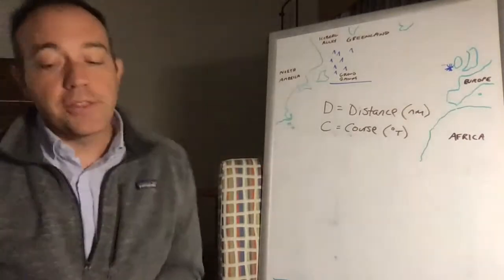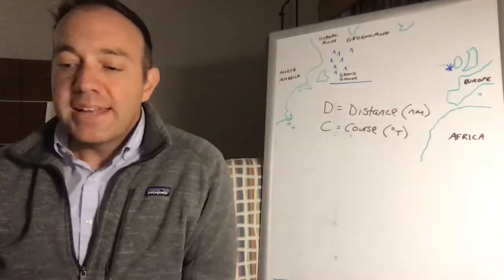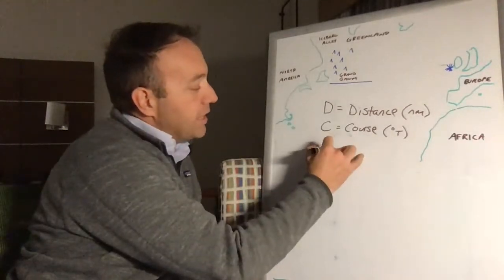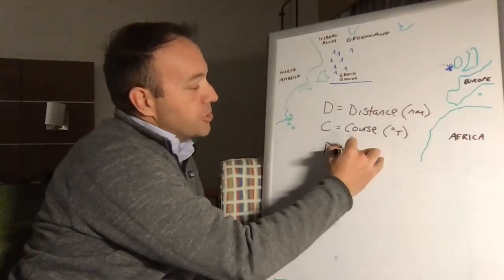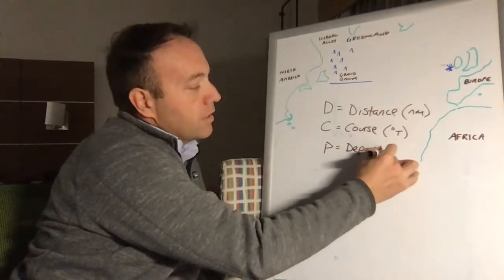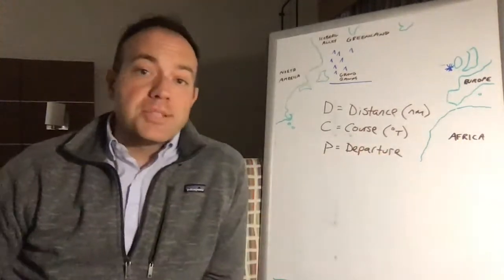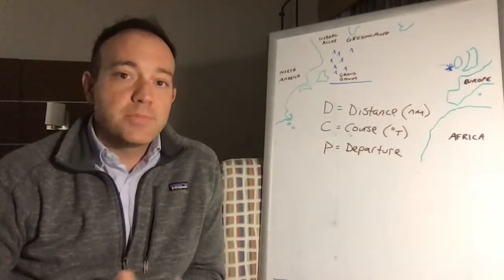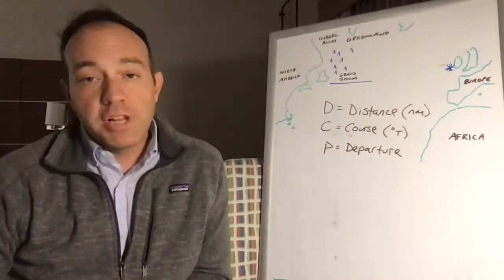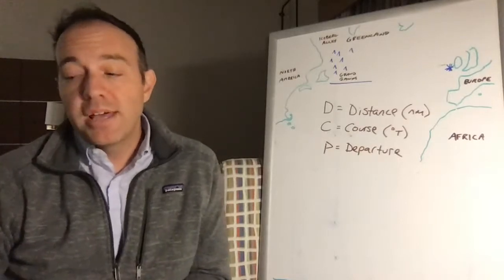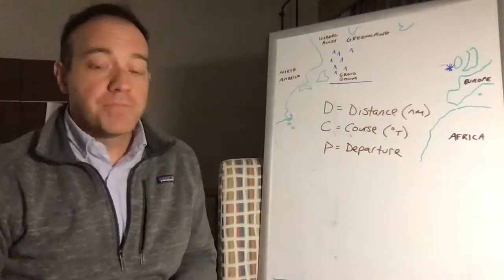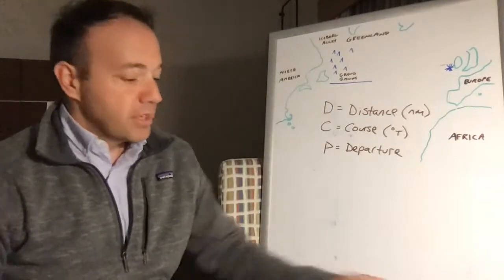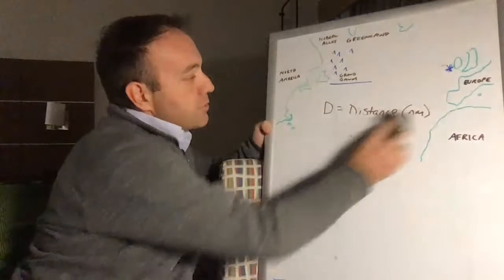D and C are two important terms. The next term is P, and that's called departure. Departure is the distance between any two meridians or lines of longitude at a given latitude. So the distance between two meridians at a given latitude — let's draw a diagram to explain this.